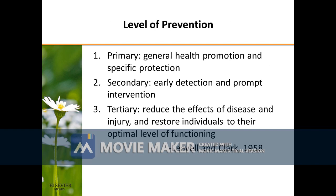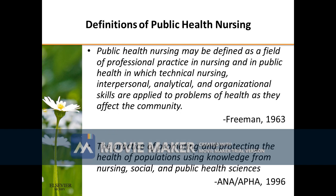There are also levels of prevention: primary, secondary, and tertiary. According to Leavell and Clark, the primary level of prevention is general health promotion and specific protection. Early detection and prompt intervention falls under the secondary level of prevention. Tertiary prevention aims to reduce the effects of disease and injury and restore individuals to their optimal level of functioning. According to Freeman, public health nursing may be defined as a field of professional practice in nursing and in public health in which technical nursing, interpersonal, analytical, and organizational skills are applied to problems of health as they affect the community.